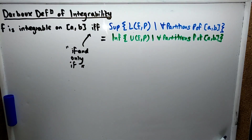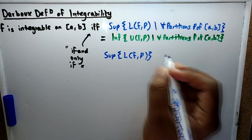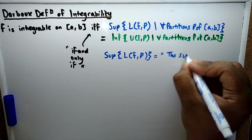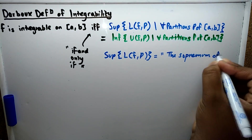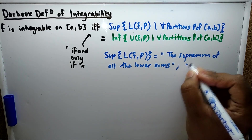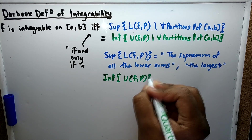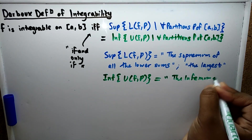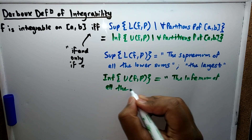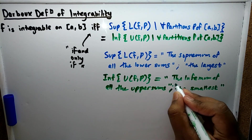The Darboux definition of integrability states that a function f is integrable on [a,b] if the supremum of the lower sums for all partitions P is equal to the infimum of the upper sums for all partitions P on [a,b]. The supremum of all the lower sums means the largest possible value in the set of lower sums, and the infimum of the upper sums means the smallest possible value in the set of all upper sums.